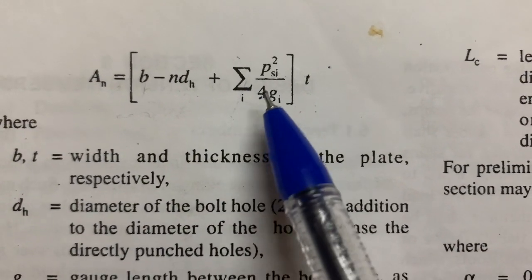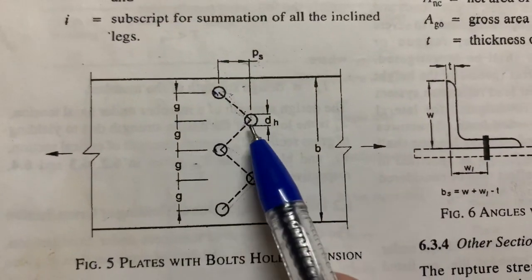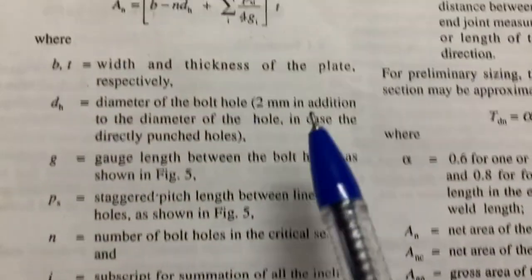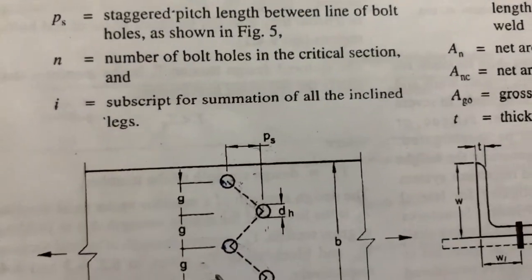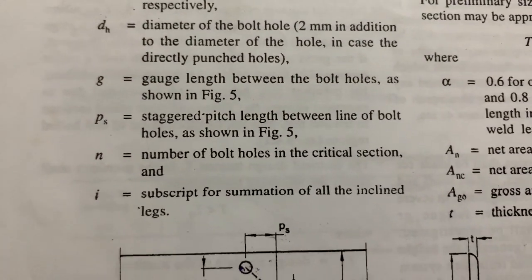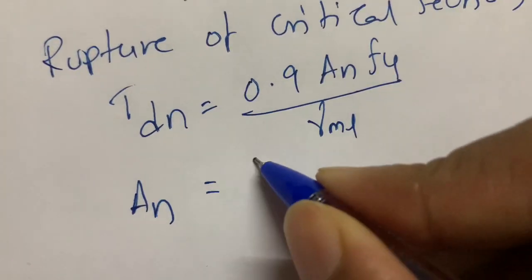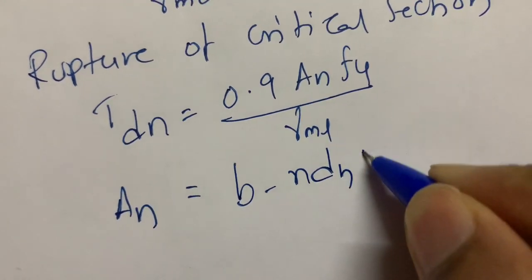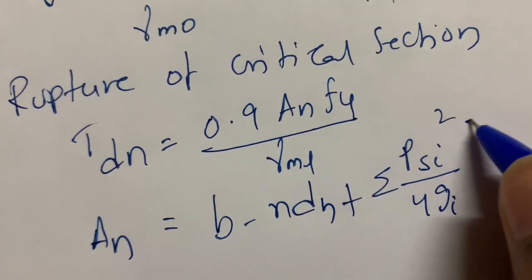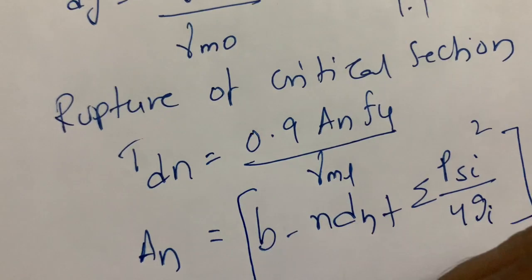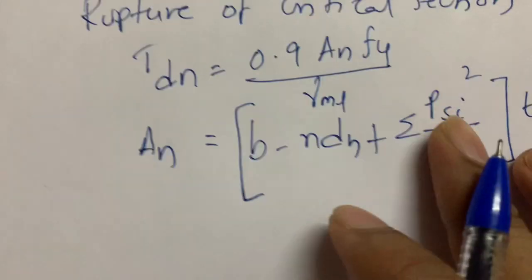The code gives the formula for An as: An = (b − n·dh + Σ ps² / 4g) × thickness. Here ps is the staggered pitch (40 mm), g is the gauge distance (25 mm from bolt center to bolt center), and dh is the diameter of the bolt hole. For 16 mm bolts, Table 19 page 73 specifies adding 2 mm, so dh = 18 mm.